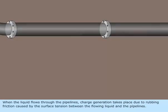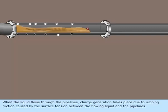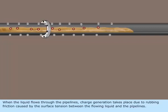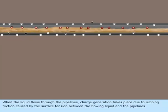When the liquid flows through the pipelines, charge generation takes place due to rubbing friction caused by the surface tension between the flowing liquid and the pipelines.